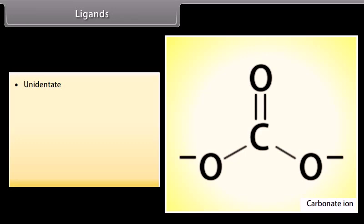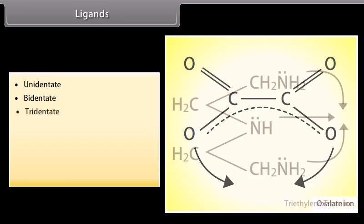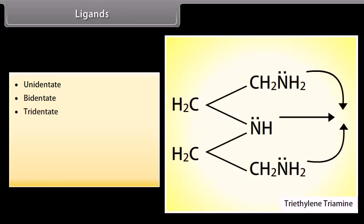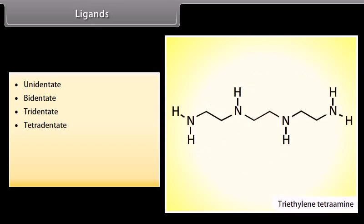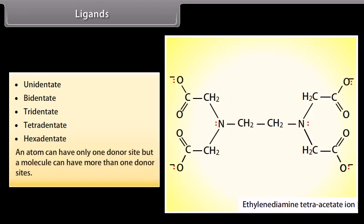Unidentate ligands have one donor site — for example, carbonate ion. Bidentate ligands have two donor sites — for example, oxalate ion. Tridentate ligands have three donor sites — for example, triethylene triamine. Tetradentate ligands have four donor sites — for example, triethylene tetraamine. Hexadentate ligands have six donor sites — for example, ethylenediamine tetraacetate (EDTA). An atom can have only one donor site, but a molecule can have more than one donor site.